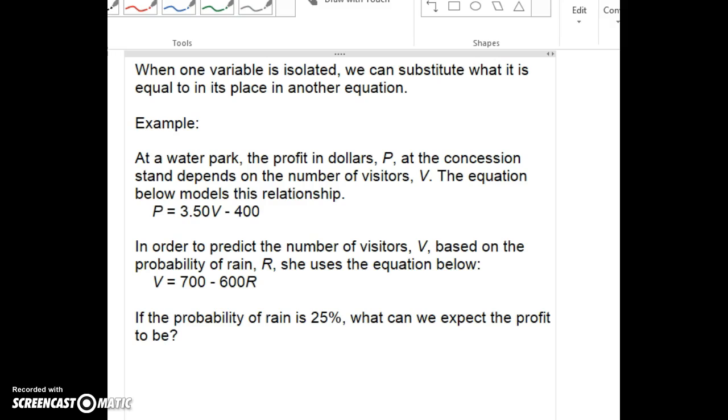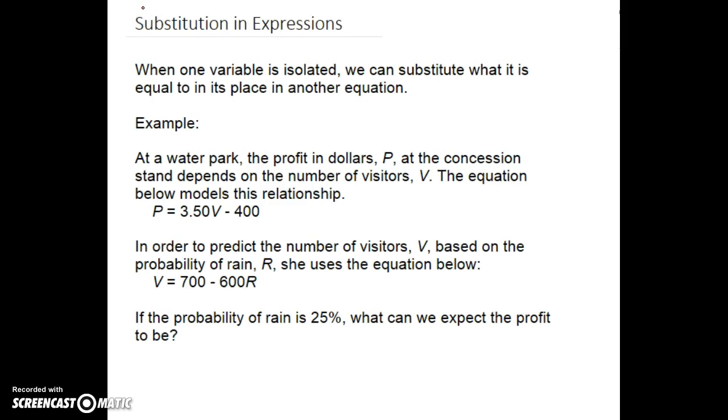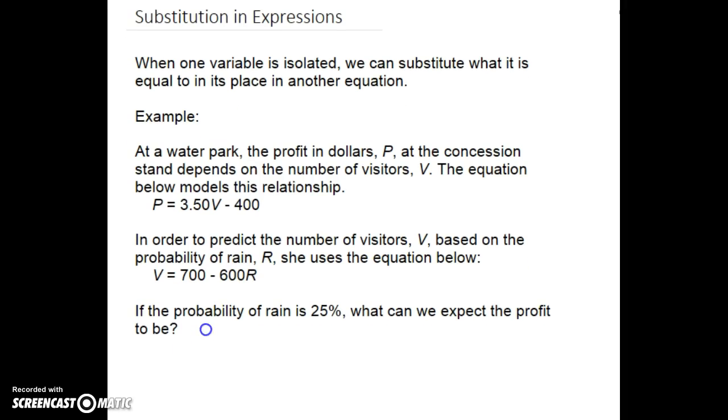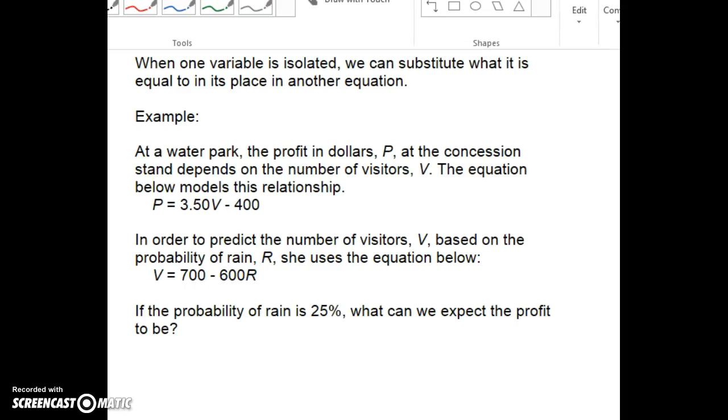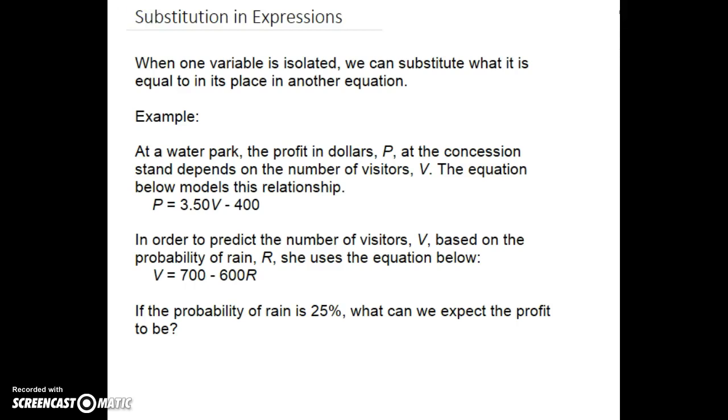Now we are going to take a look here and we have to actually be able to use both equations to figure this out. So with rain at 25%, I know anytime I deal with a percent I have to change it to a decimal. The first thing I'm going to have to do is figure out how many visitors we will have, because the percent chance of rain is the information I have and that's the only equation I have R in.